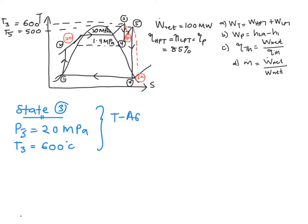In fact, if you look at your TS diagram sketch, entering your high pressure turbine must be in a superheated region. So from table A6, H3 equals 3539.0 kJ per kg.